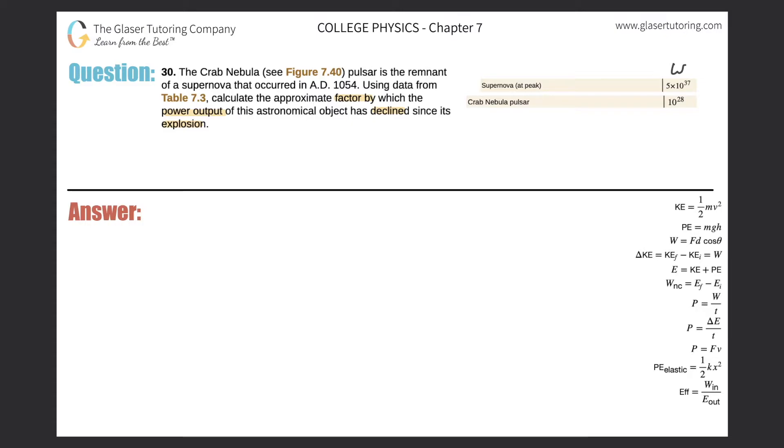So a supernova's power at its peak is about 5 times 10 to the 37 watts, and the Crab Nebula Pulsar is 10 to the 28 watts, as it is today, that is.